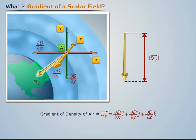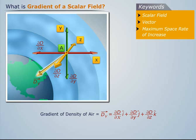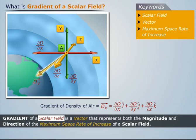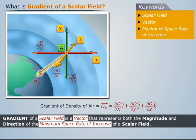Thus, gradient of a scalar field is a vector that represents both the magnitude and direction of the maximum space rate of increase of a scalar field.